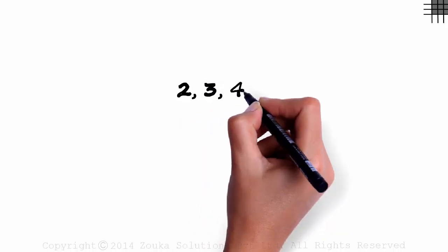2, 3, 4, and 7. How do we find the arithmetic mean and the median of this set of numbers?